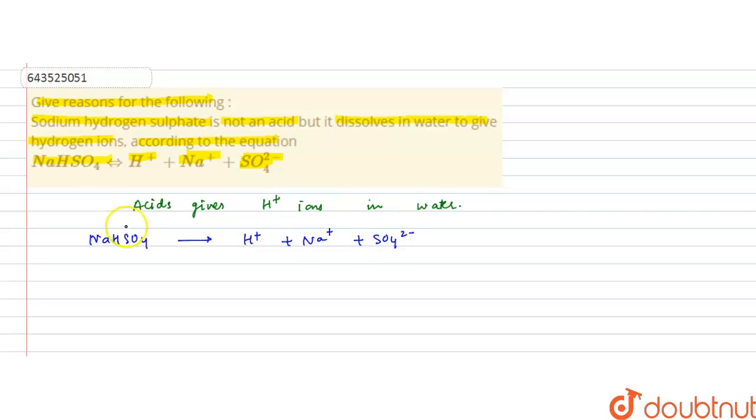Because sodium hydrogen sulfate, NaHSO4, is formed by partial replacement of the hydrogen ion, partial replacement of H positive ion in H2SO4, that is sulfuric acid.